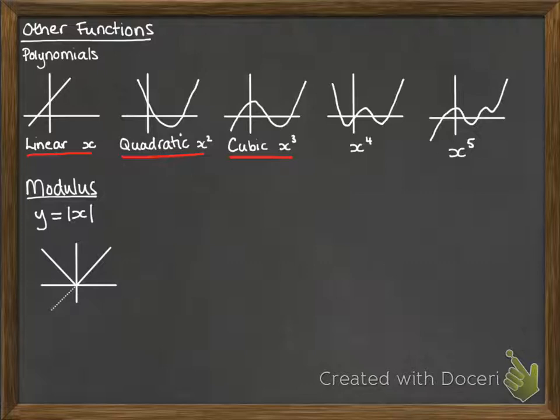And that's true of any function. If we want to do the modulus of that function, we just reflect up the part that goes below the x-axis. So we could do this for, say, x squared minus 4. So that's what x squared minus 4 would look like. But if we're doing the modulus of it, anything that goes below the x-axis has to be reflected up.